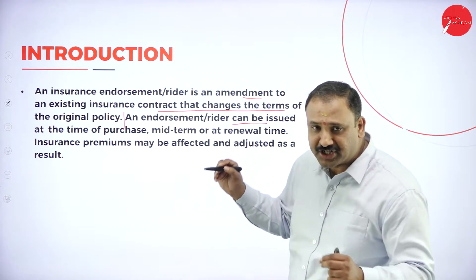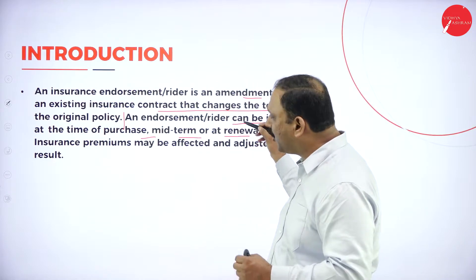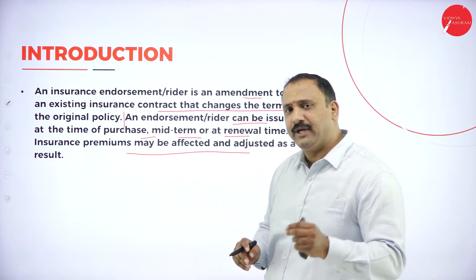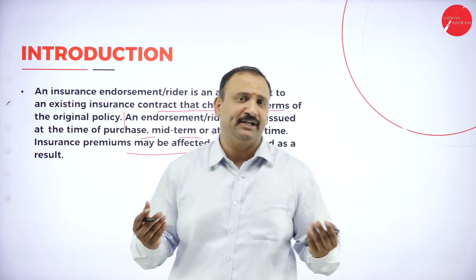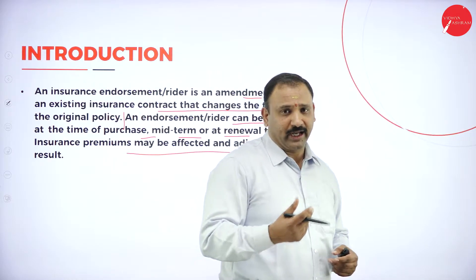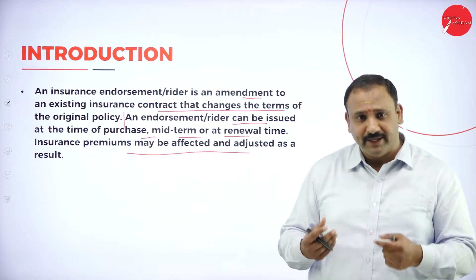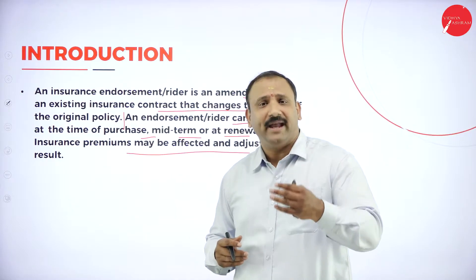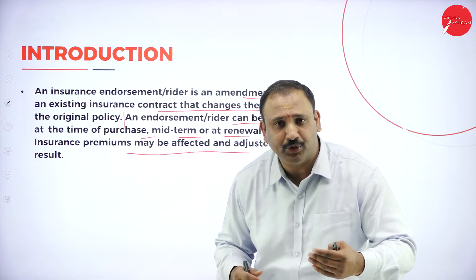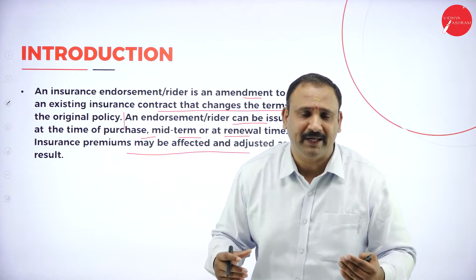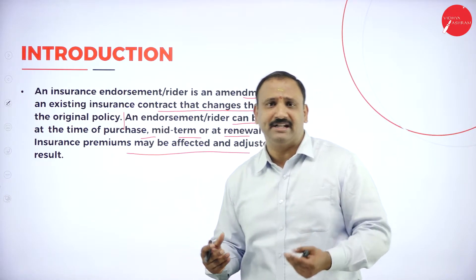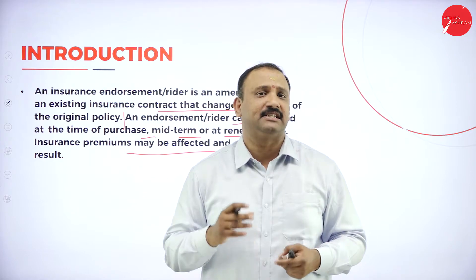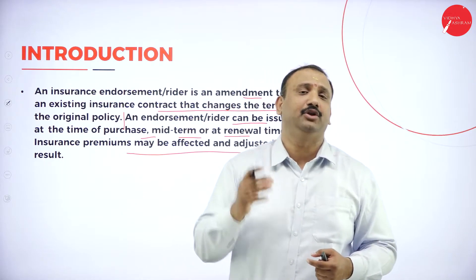An endorsement rider can be issued at the time of purchase, midterm, or at renewal, and insurance premium may be affected and adjusted as a result. Whenever we want to give an endorsement — in the beginning, the middle, or the end — based on the riders given, the insurance premium will automatically be increased or decreased and adjusted over a given period of time.